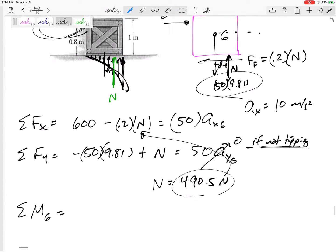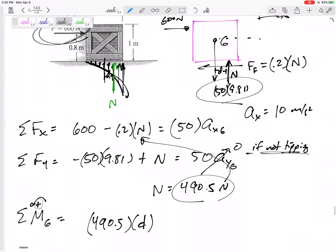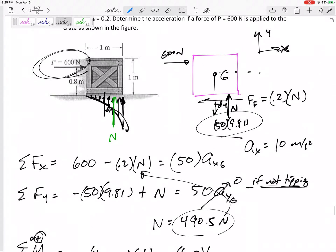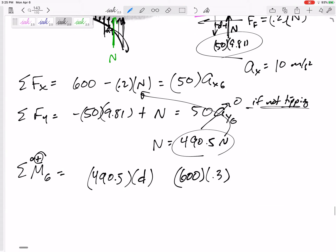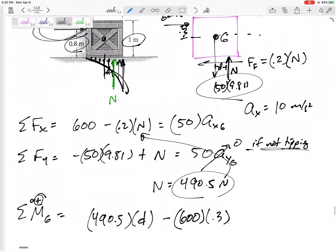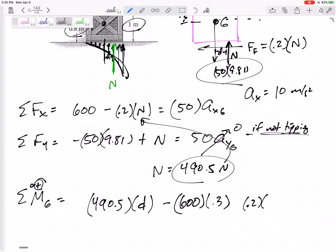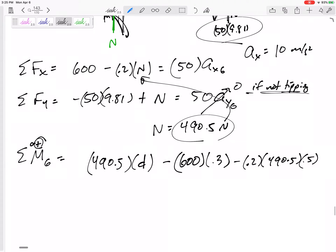So the weight goes straight through point g, but now n, which was 490.5, is not straight through g. It is a distance d away, creating a, do we want to say positive is counterclockwise, so creating a positive moment. That's 600 newtons. Where's that? That's 0.8 above, but g is at the very middle, 0.5. So this distance would be 0.3. Positive or negative, that would create a negative rotation about g. And then force the friction, 0.2 times 490.5. How far away from g is that? That is 0.5 away from g, creating a negative moment.